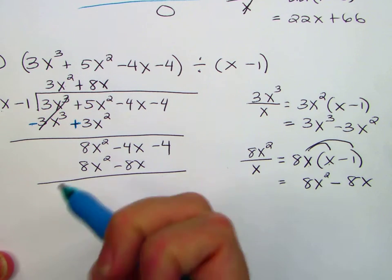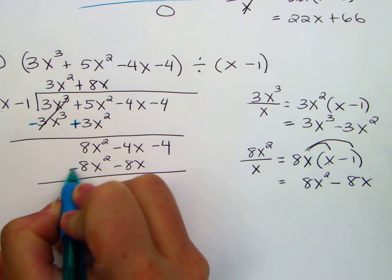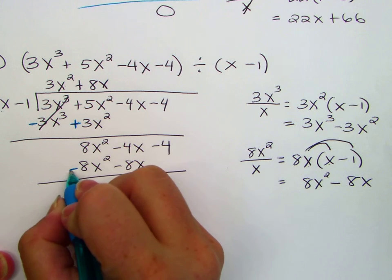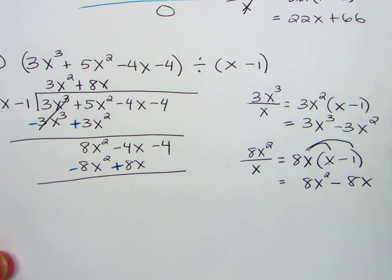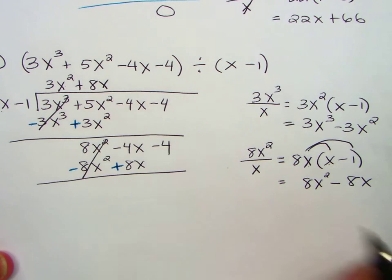Again, we are subtracting, 8 and 8 is 16, 8 minus 8 is zero, but you can't just put the minus here, you have to change the sign of everything. Now 8x squared minus 8x squared is zero, it cancels out.